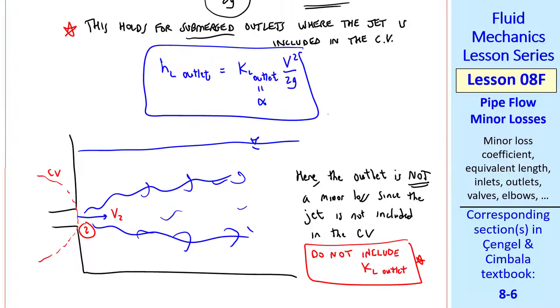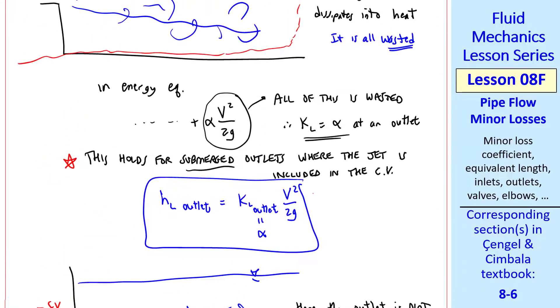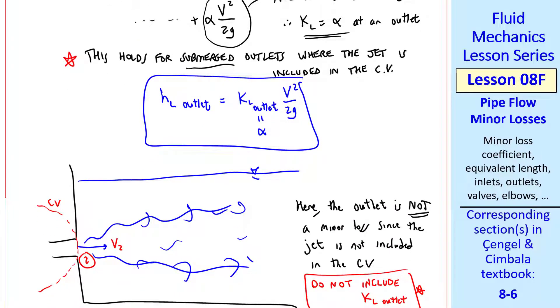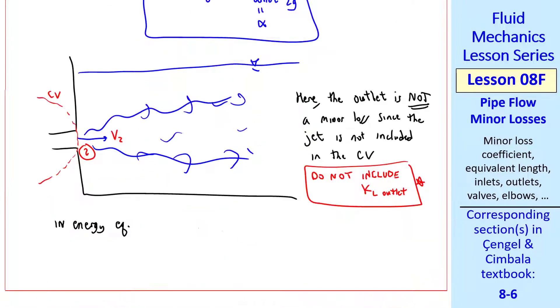Well, then the alert student may ask, then wouldn't we get a different answer, including or not including the outlet as a minor loss? Well, actually you get the same result, because in the energy equation in this case, the alpha 2 V2 squared over 2g term is not zero.